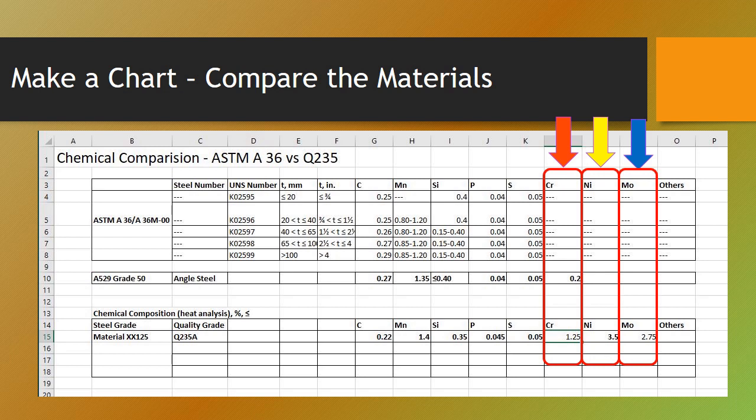And here would be an example. I just made up some numbers here for the bottom one. I've got material XXX125, and I threw in a chrome of 1.25 and nickel of 3.5 and some molly at 2.75. That's not going to match up with any of our materials. So then I can't, in good faith and good conscience, I can't go to the engineer of record and say, yeah, this stuff's pretty close. You can see our chemistries are way out of bounds here.